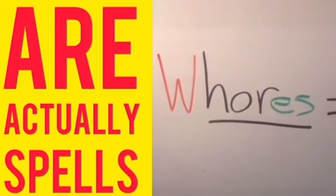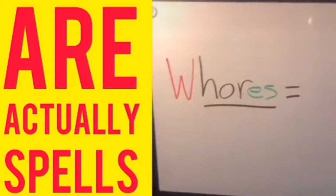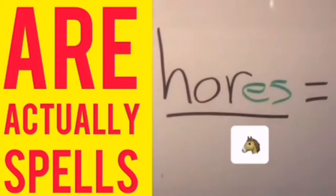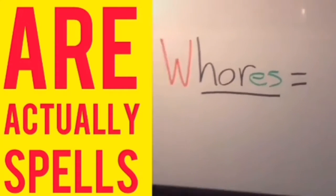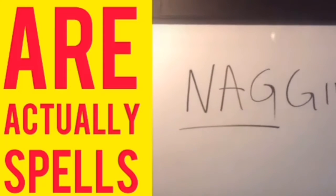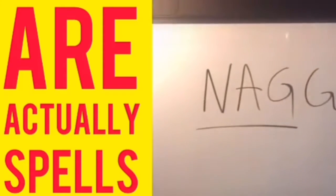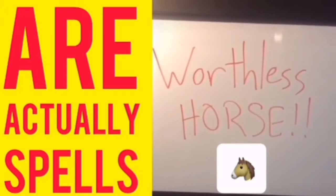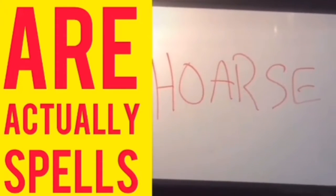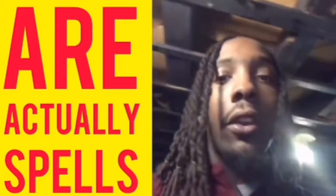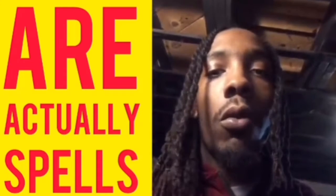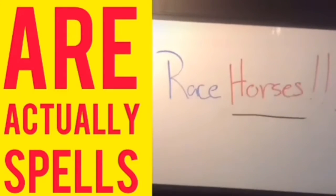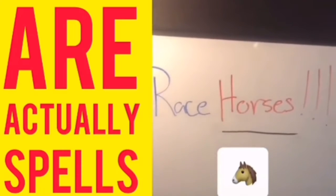Women who have sex with a lot of men are called whores. Whores and horse are phonetically similar and are the same if you flip the E and the S in horse. In a relationship, a man might say 'stop nagging' — a nag is literally defined as a worthless horse. And after nagging and arguing so much, your voice may go hoarse. All successful relationships are called what? Stable relationships. And a stable is a building to store racehorses.